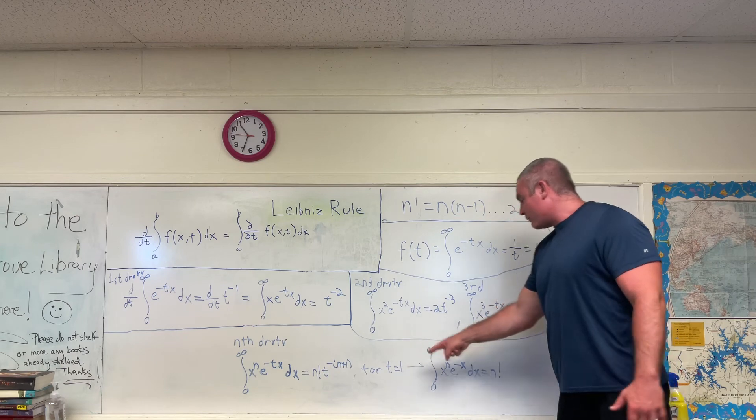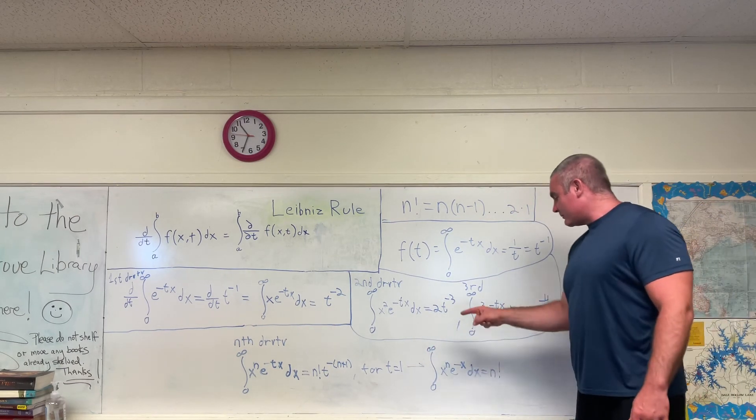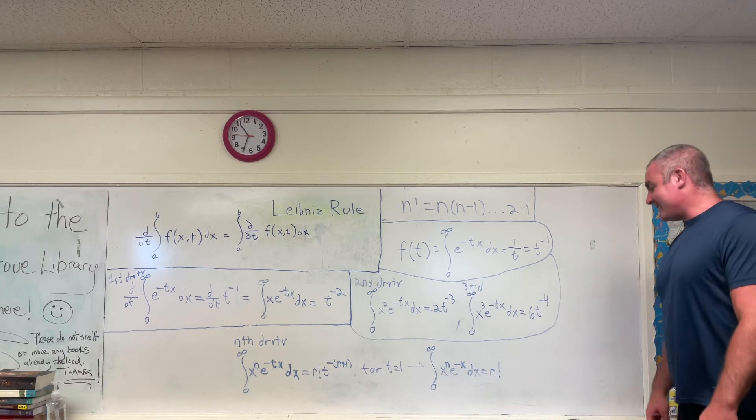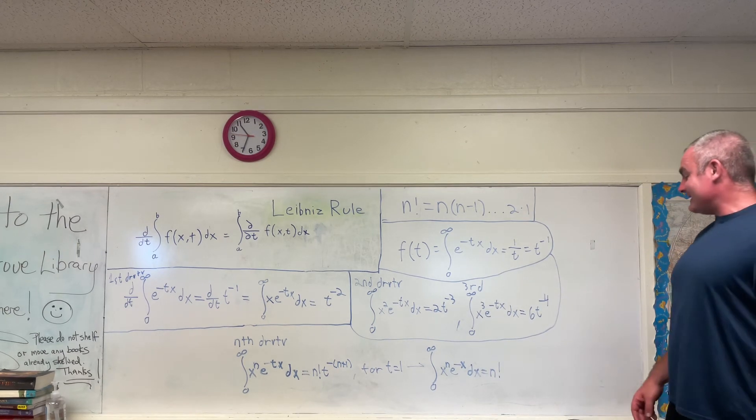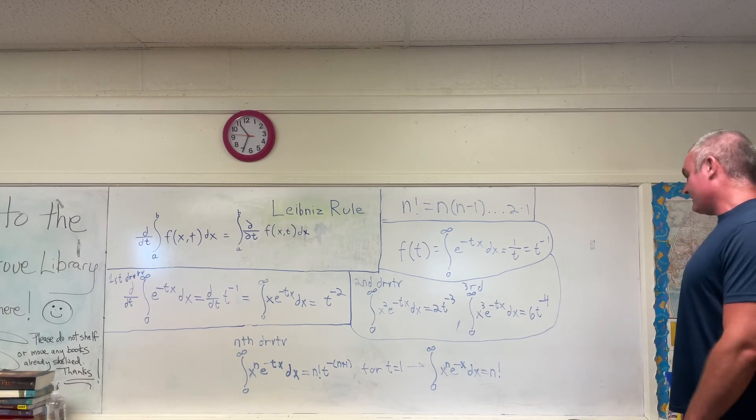So for t equals 1, we get the following. That the integral from 0 to infinity of x to the n e to the negative x dx is equal to n factorial.